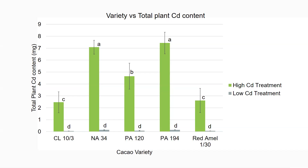Looking at total plant cadmium content, under low cadmium conditions the total plant cadmium content was significantly lower than under high cadmium conditions — shown by the green bars. We also see significant differences in total plant cadmium content between varieties under high cadmium treatment conditions. However, total plant cadmium content is influenced by plant mass, and some varieties are more vigorous — specifically NA34, PA120, and PA194 were larger — so this does not give the full picture of uptake.